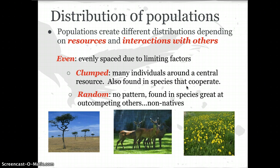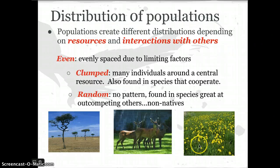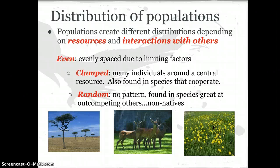The last distribution pattern is random, where no pattern is present and the organism lives wherever its seed dropped if it's a plant, or wherever it ends up if it's an animal. These are often species that are great at outcompeting others or have very low needs. Take the dandelion — they take advantage of poor soil or poor water conditions and outcompete other species for limited resources. They produce a ton of seeds, scatter them, and wherever they land, they do pretty well.